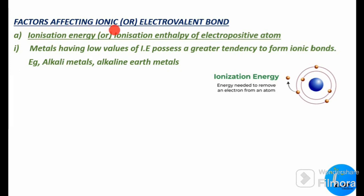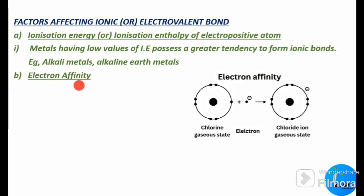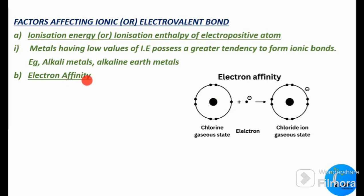The next important factor affecting the ionic bond is electron affinity. What is electron affinity? The electron affinity of an atom is the amount of energy released when an electron is added to a gaseous atom. When an electron is added to a gaseous atom, some amount of energy is released, and that energy is called electron affinity.